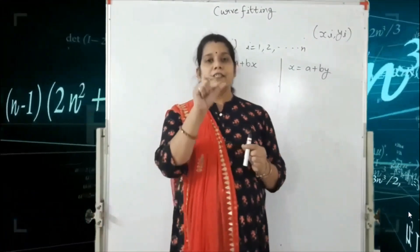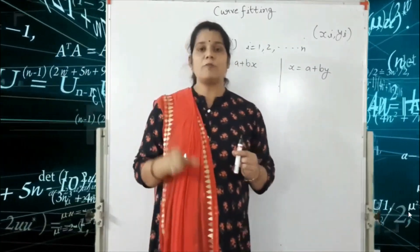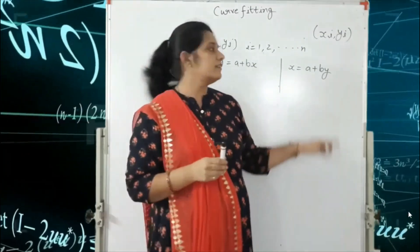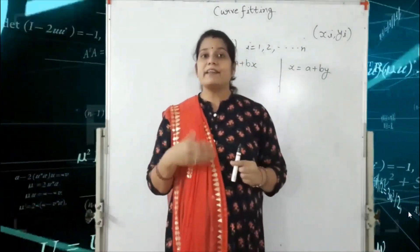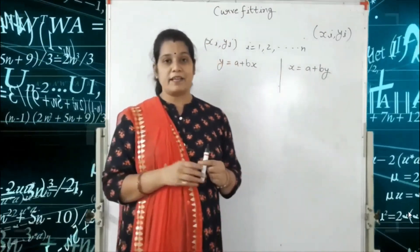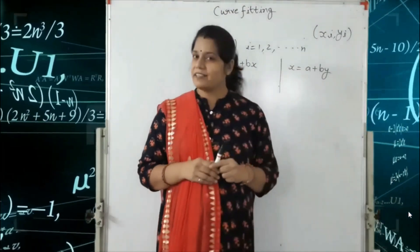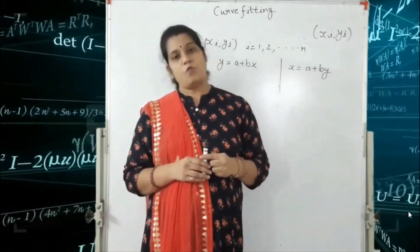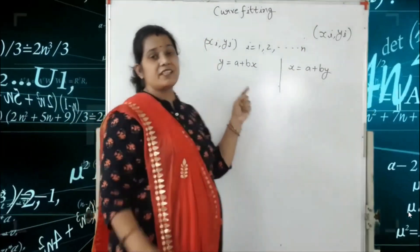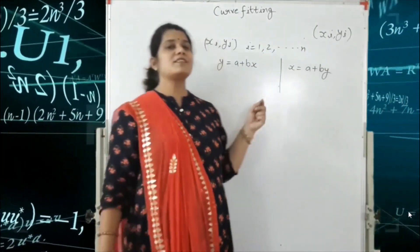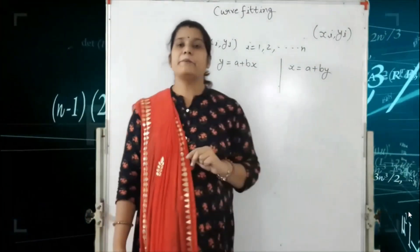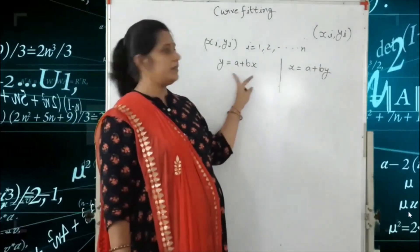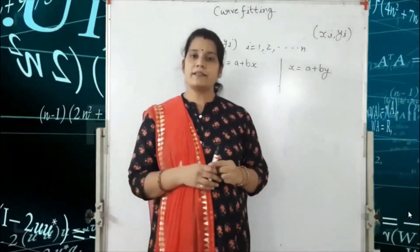Sometimes we are given the Straight Line Equation along with columns of X and Y, and in the question it says consider Y as the independent variable. Always keep in mind: if Y is the independent variable, then we use X is equal to A plus BY. In this equation, we first find the constant values of A and B, and after that we put A and B into the equation to get the Straight Line Equation Y is equal to A plus BX.